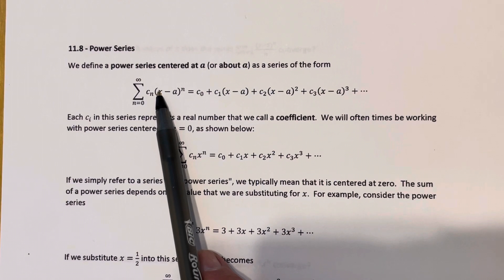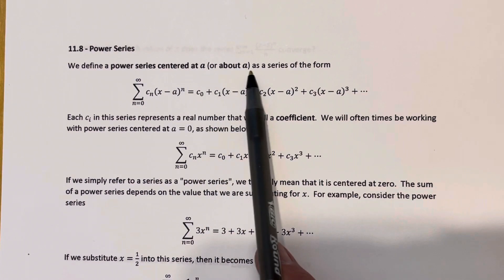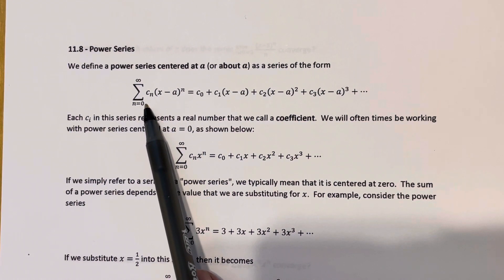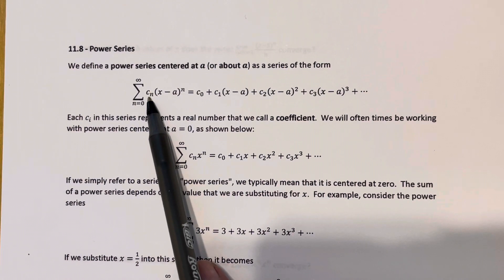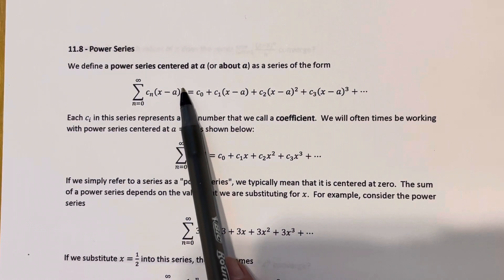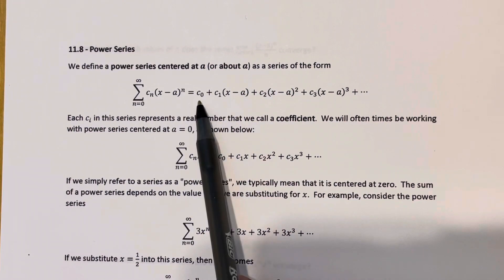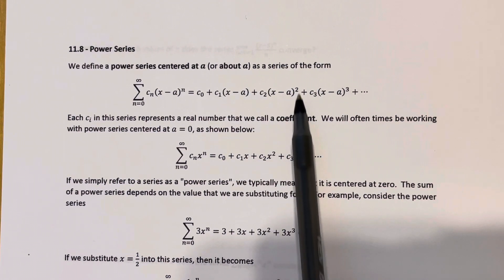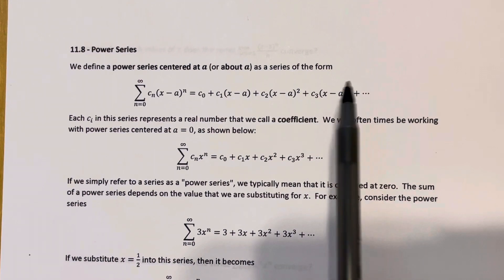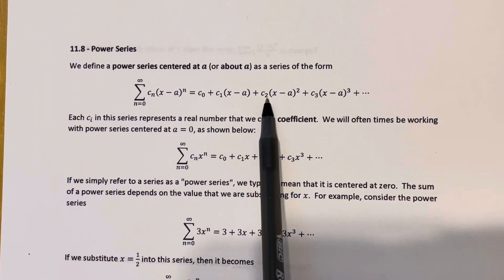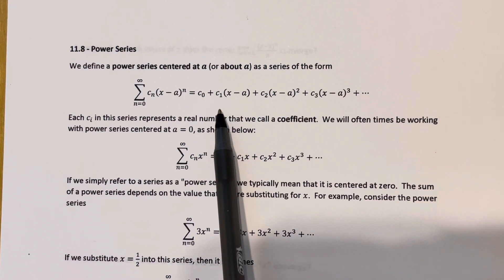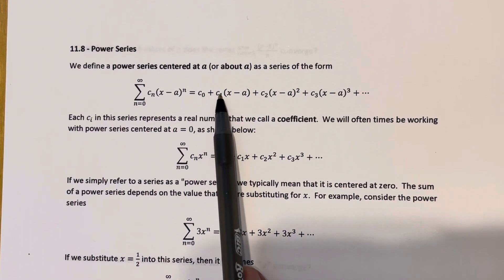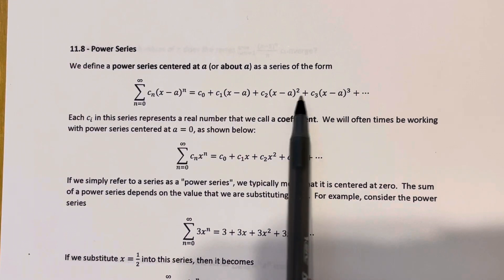We say that this is a power series centered at A, or sometimes 'about A,' if it's a series of this form. The sum starts at n equals zero and goes to infinity, with terms cn times (x minus a) to the power of n. If you expand the first few terms, you get c0 plus c1(x minus a), plus c2(x minus a) squared, plus c3(x minus a) cubed, and so on. The c's appearing here are coefficients — constant terms multiplied to these polynomial terms.